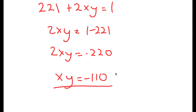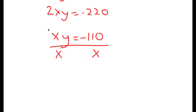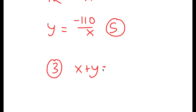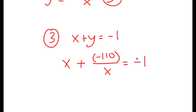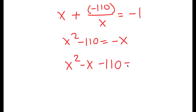I'll divide both sides by x, giving y equals negative 110 over x. This is equation 5. Going back to equation 3, x plus y equals negative 1, I substitute y: x plus (negative 110 over x) equals negative 1. Multiplying both sides by x gives x squared minus 110 equals negative x, so x squared minus x minus 110 equals 0.